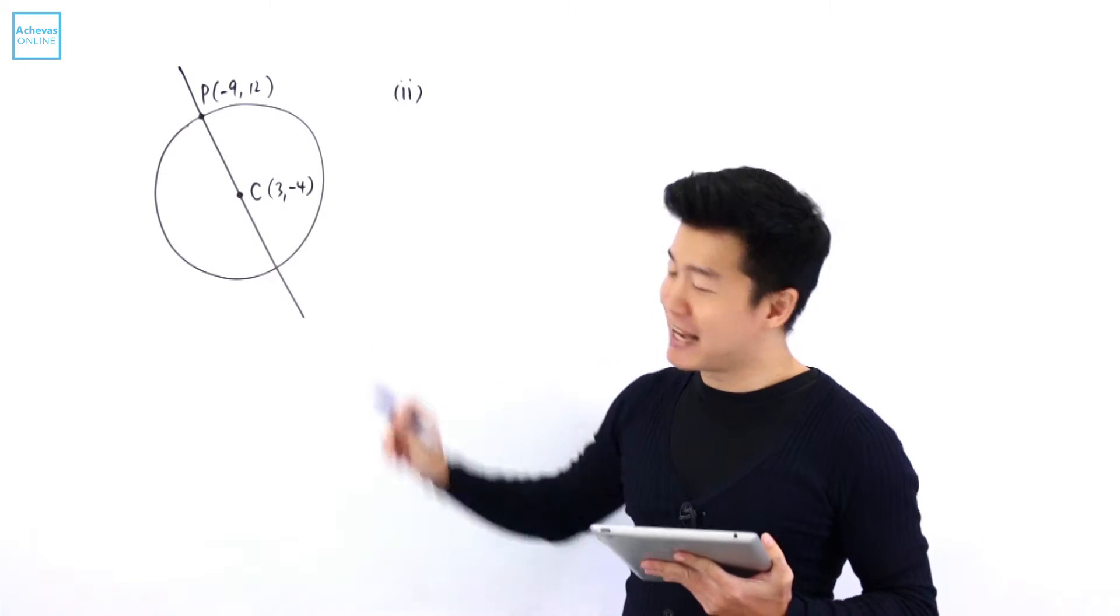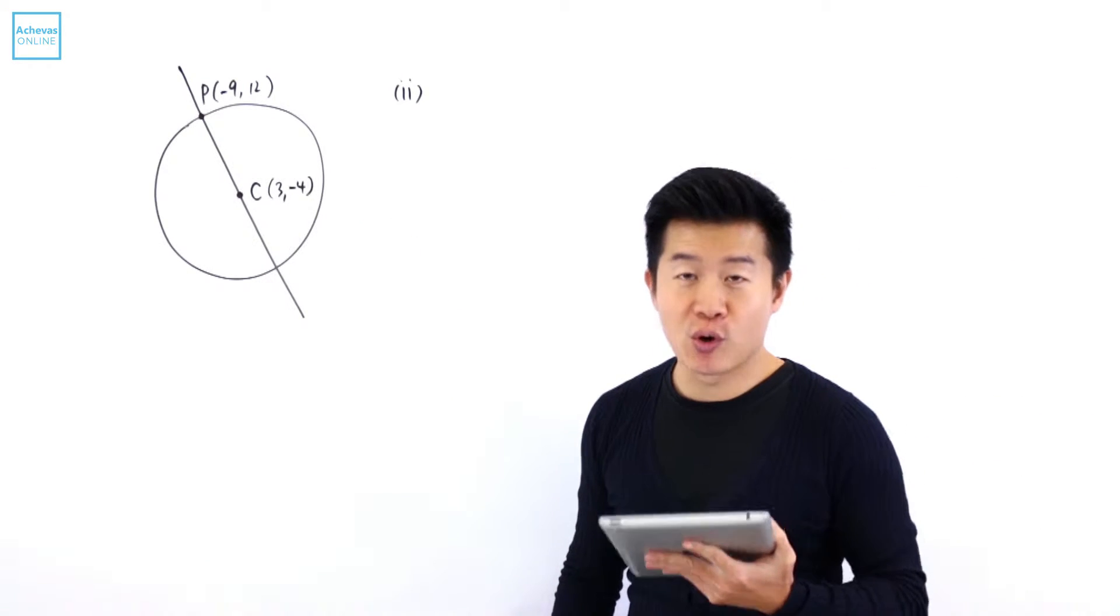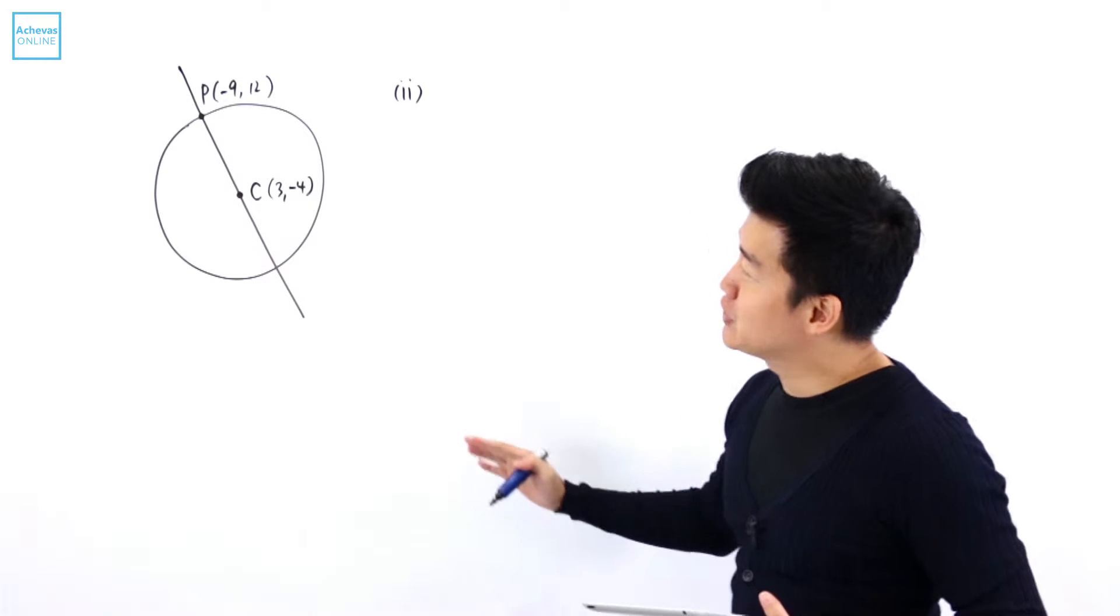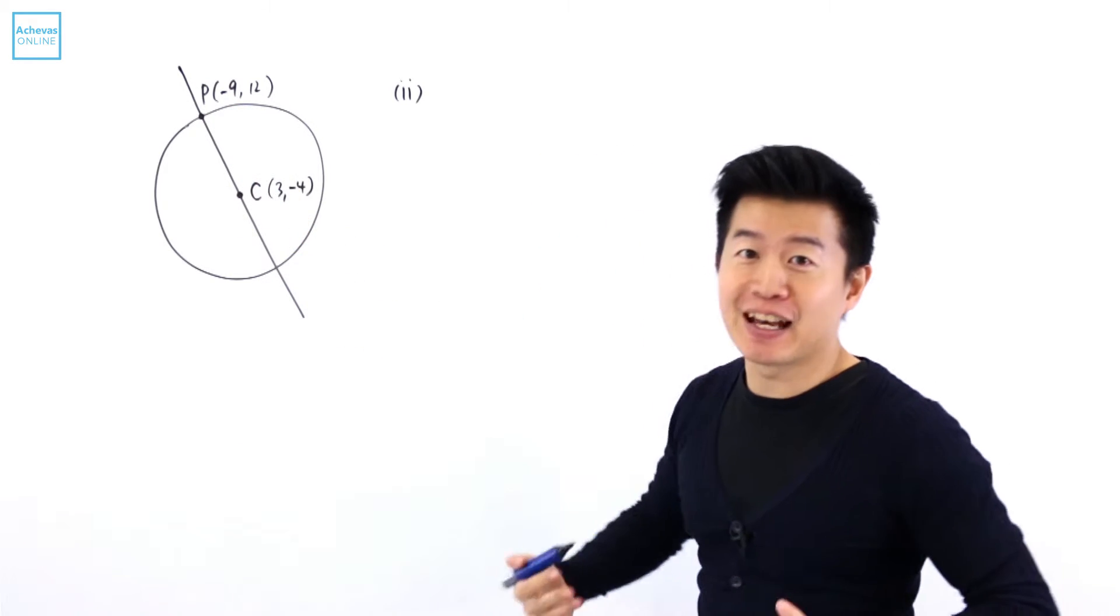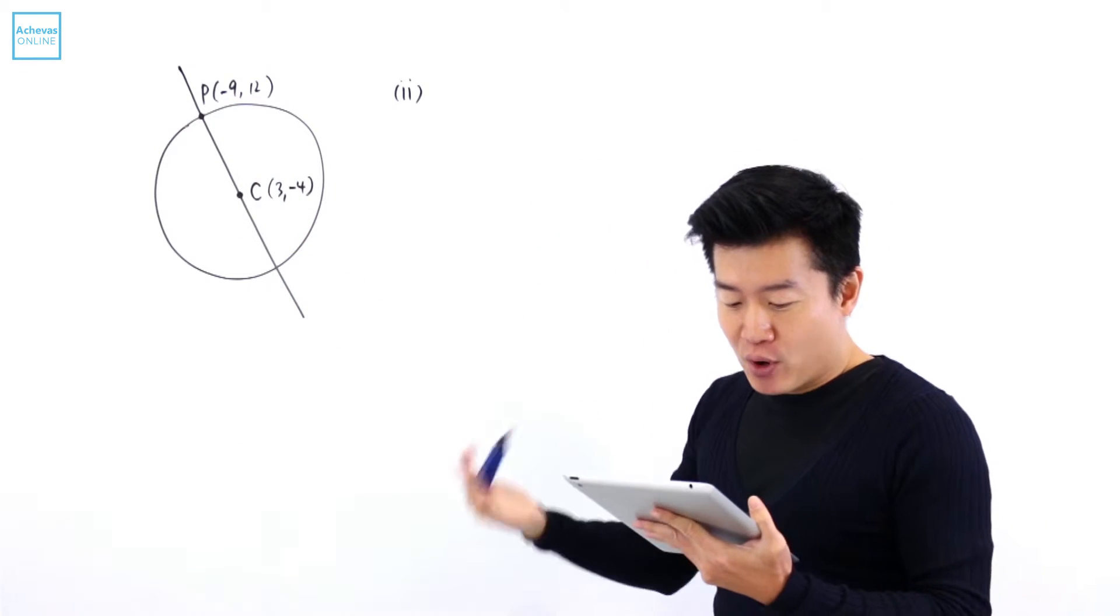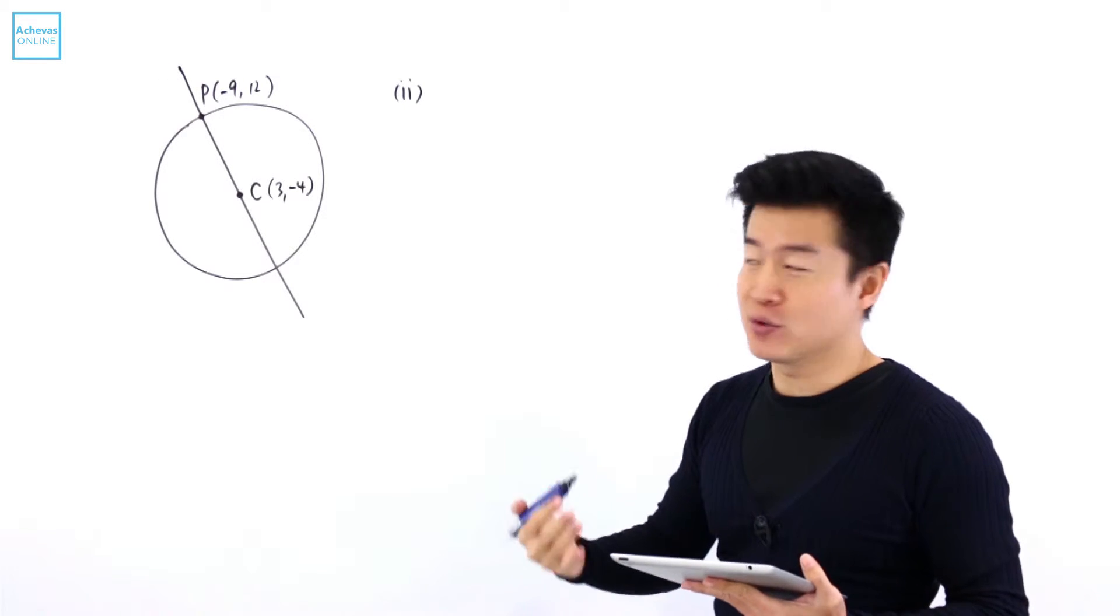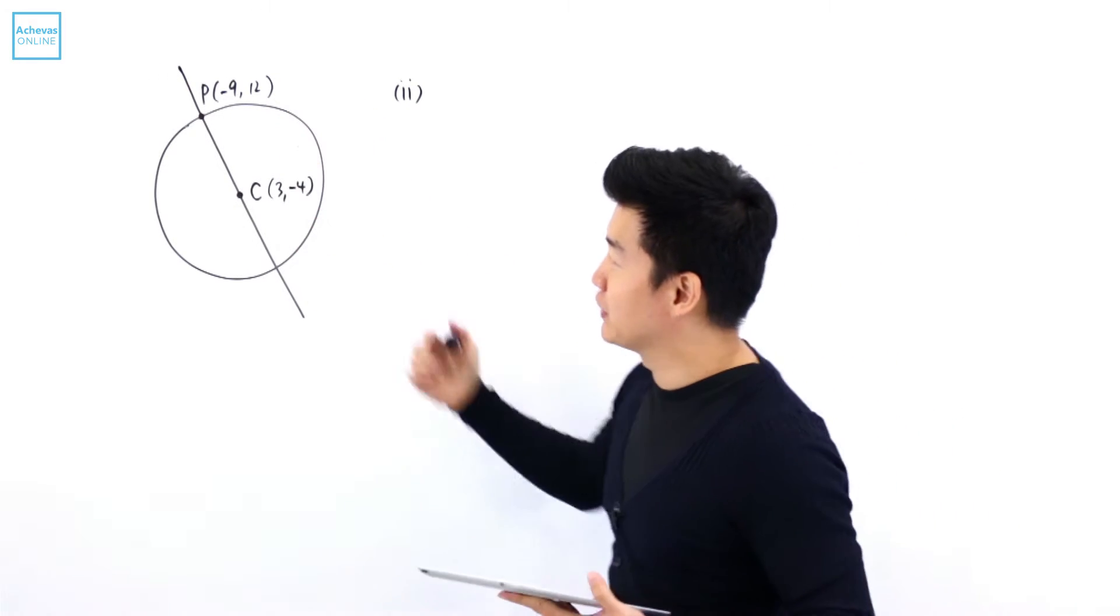In order for me to show that this line CP passes through the origin O, I'm going to first find the equation of CP, then I will verify that the point O, which has coordinates of 0,0, is going to satisfy the equation of this line.